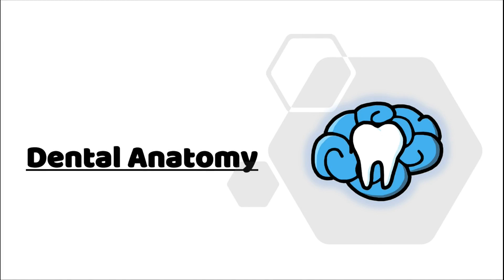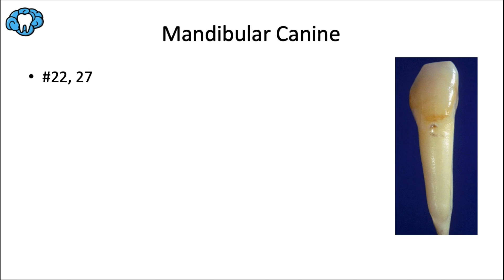Hey everyone, Dr. Ryan here. Welcome back to our dental anatomy series. This video is going to be focused on the mandibular canine. Here we have a picture of the permanent mandibular canine, and using the universal tooth numbering system as we've done throughout the series, this would include tooth number 22 and 27.